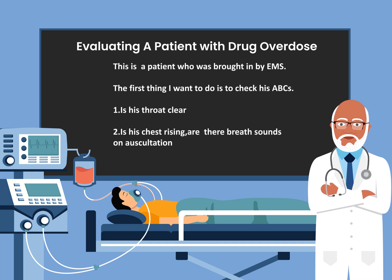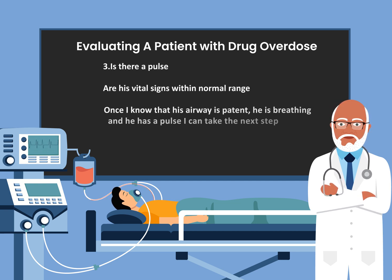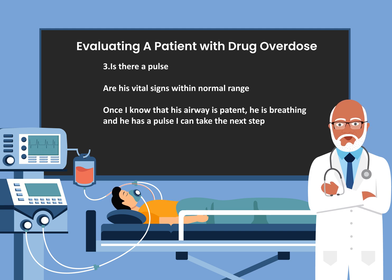This is a patient who was brought in by EMS. The first thing I want to do is to check his ABCs. Number one, is his throat clear? Number two, is his chest rising? Are there breath sounds on auscultation? Number three, is there a pulse? Are his vital signs within normal range? Once I know that his airway is patent, he is breathing and he has a pulse, I can take the next step.